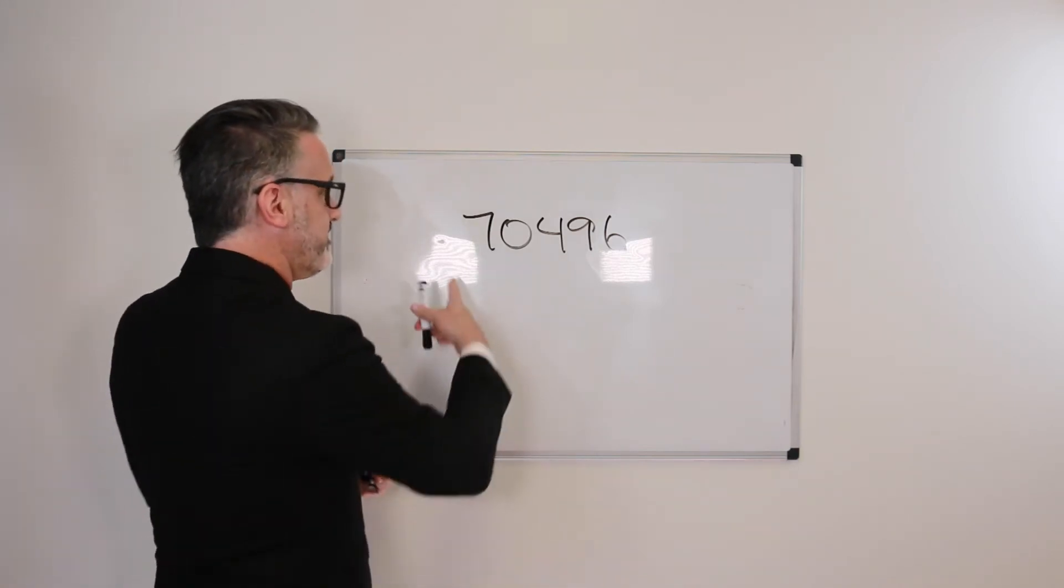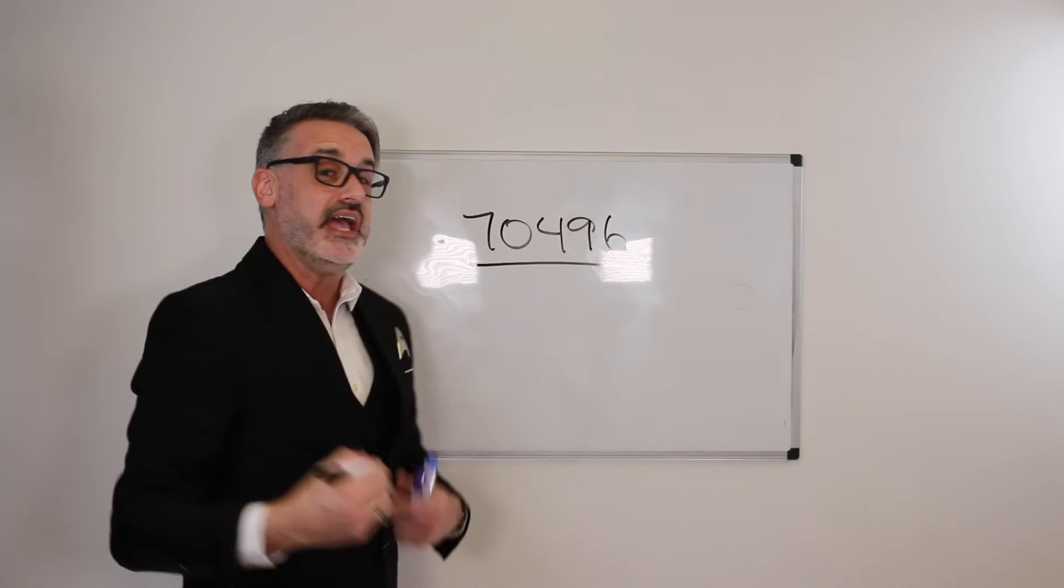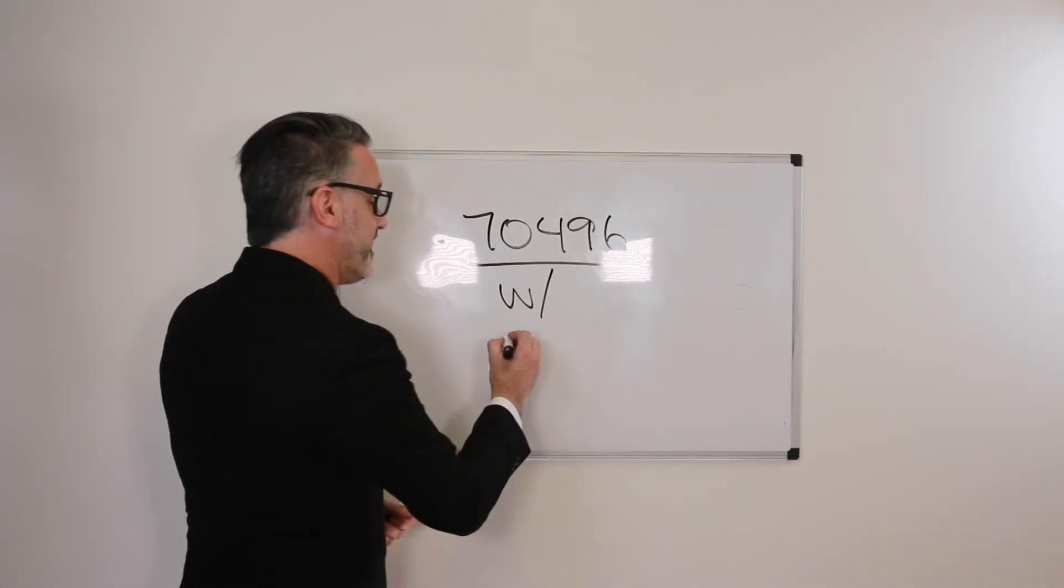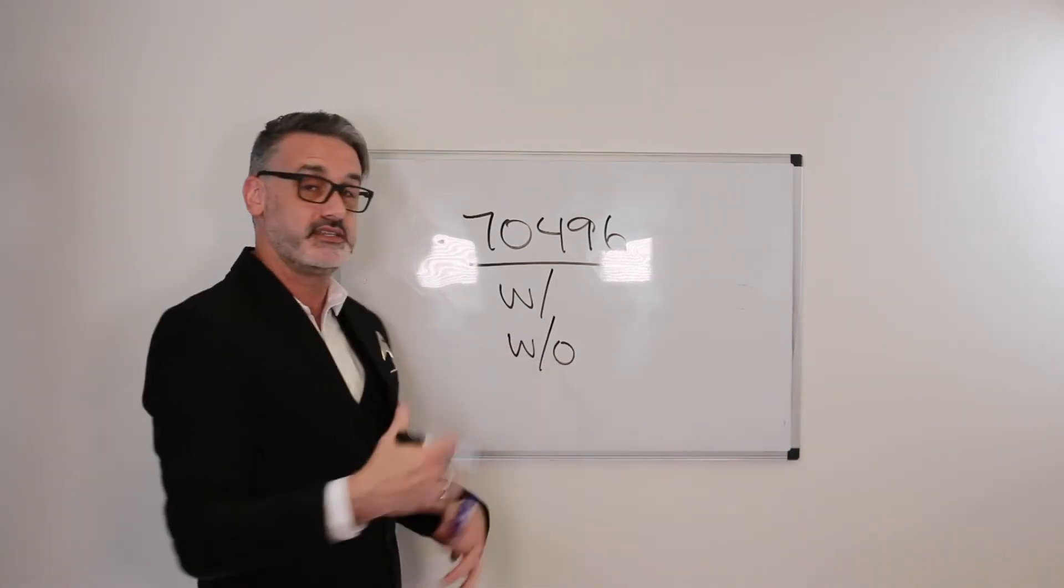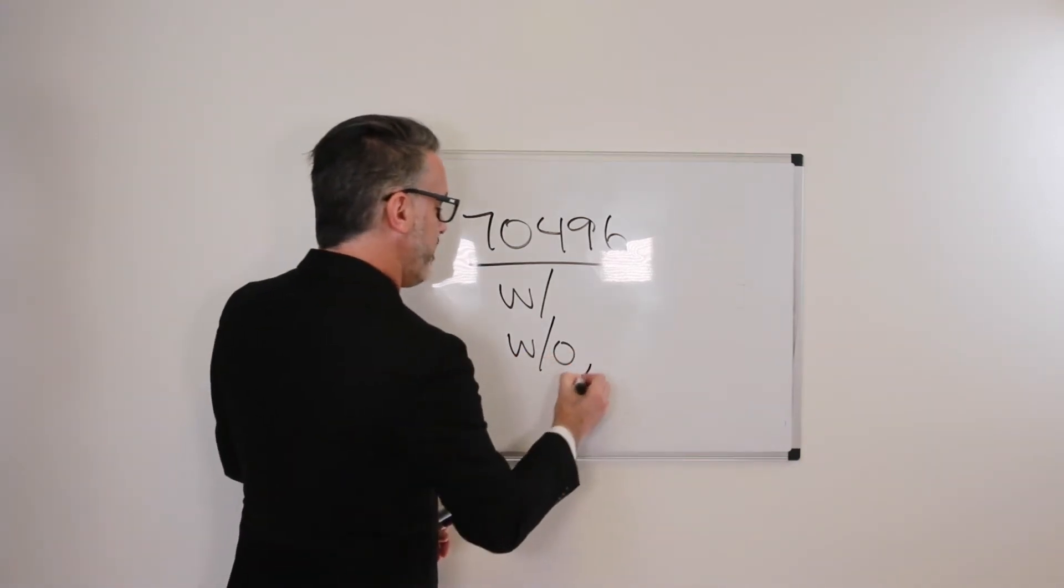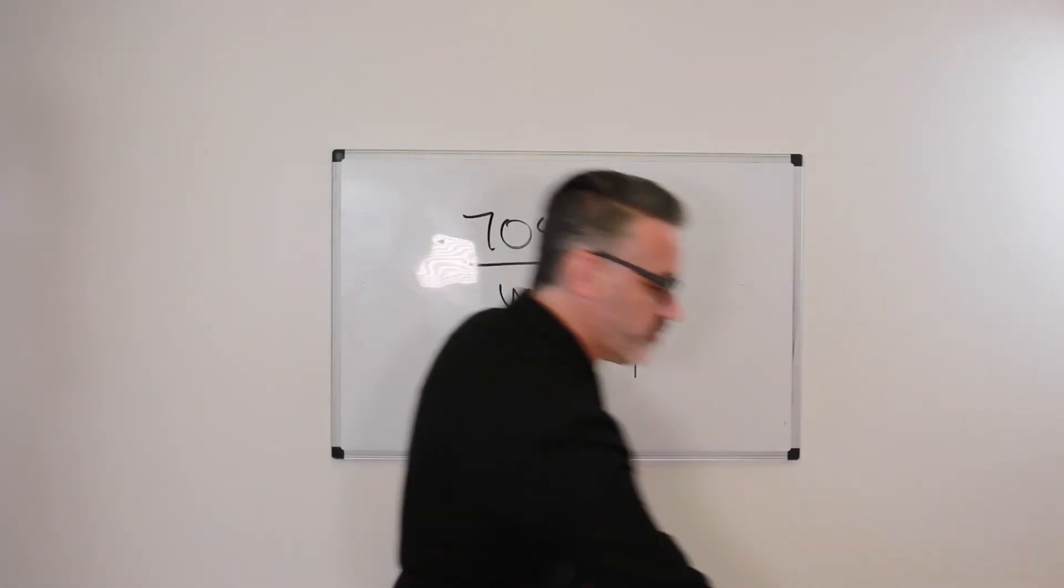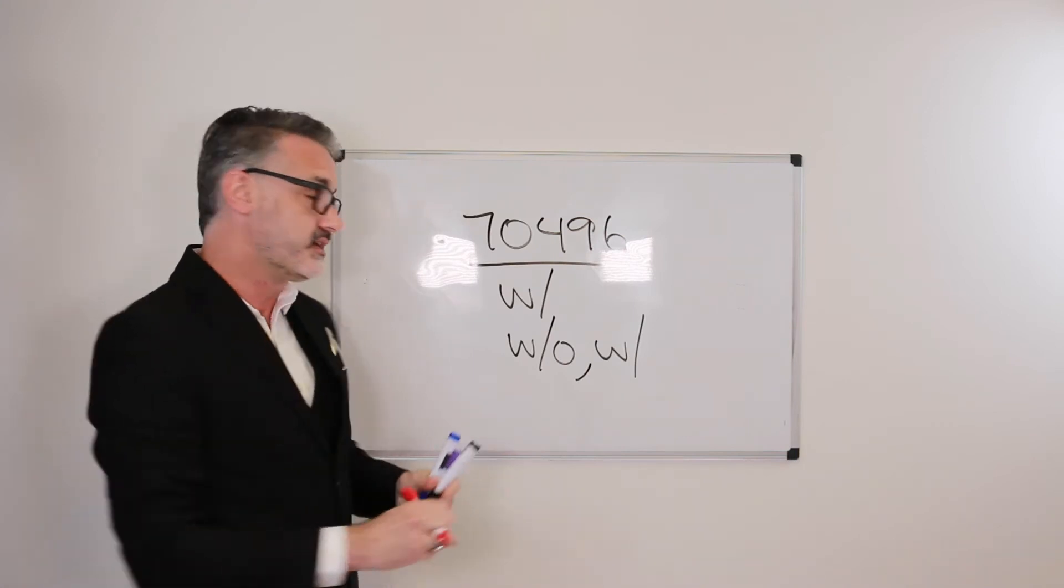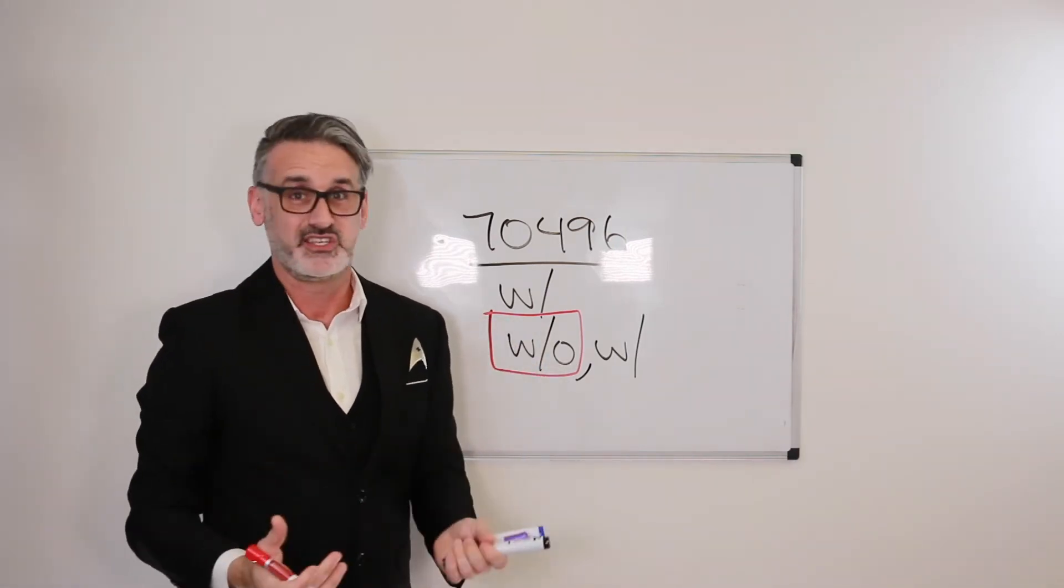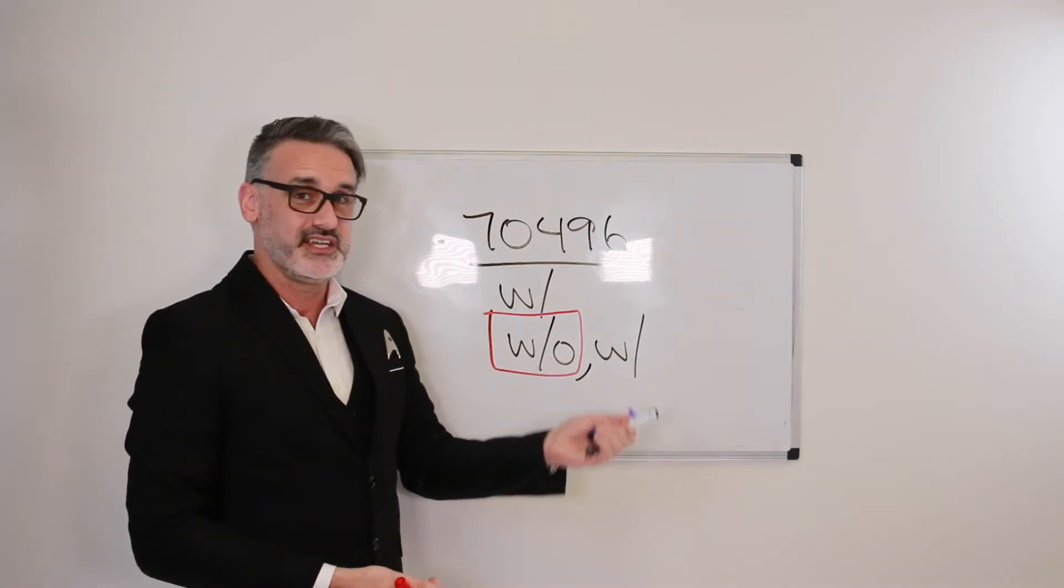So, what that means is, let's say we're doing a CTA of the head, the brain, then code 70496, if the provider just does one CTA with contrast, we code that 70496. If they do the without contrast, since it says, includes non-contrast images if performed, so if they do a CTA without contrast, then one with contrast, that's still the same code, same reimbursement. So, essentially, what we're saying is that when we code CTAs, this right here, the CTA without contrast, that is not separately reimbursable. So, that's a buy one get one free deal. They're reimbursing the doctor for the CTA with the contrast, but not for the without.